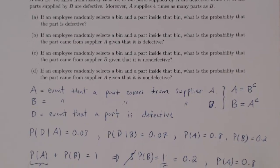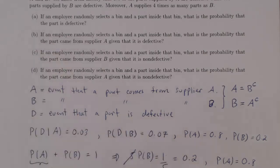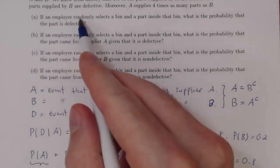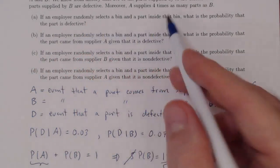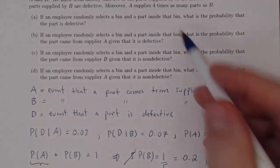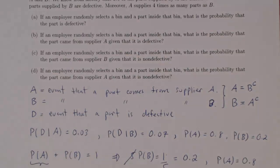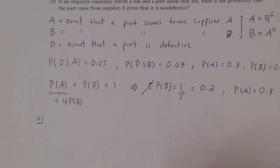The first question: imagine a warehouse with large bins containing small parts — some bins from Supplier A, some from Supplier B. If an employee randomly selects a bin and a part inside that bin at random, what is the probability that the part is defective? We're simply asking for P(D).